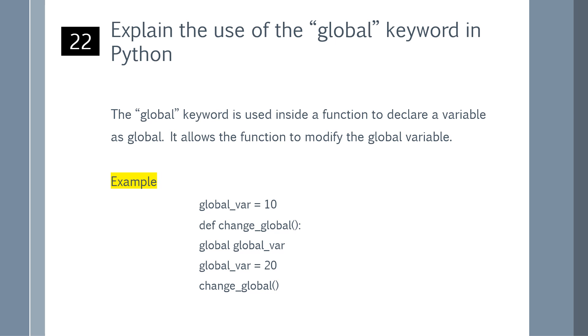The global keyword is used inside a function to declare a variable as global. It allows the function to modify the global variable. You can refer to the example shown on the screen.